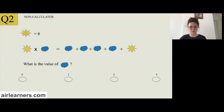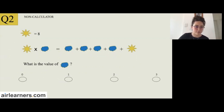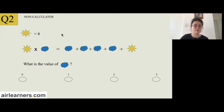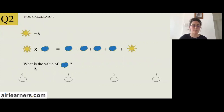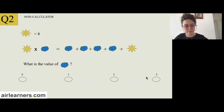Moving on to question two — this is still non-calculator, keep those calculators away. We can immediately see that it's an algebra question. We'll read it first: Sun equals eight. Sun times cloud equals cloud plus cloud plus sun. What is the value of cloud? Remember to read the answers as well so you get a rough range — so zero to three. Often in NAPLAN, algebra questions are phrased like this, represented with random pictures.